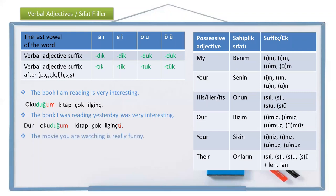Another example: the movie you are watching is really funny. The noun is film. Watch is izle, add the verbal adjective suffix to get izledik, then the possessive adjective suffix for 'you' — -in: izlediğin film, the movie you are watching. Is really funny — gerçekten komik.